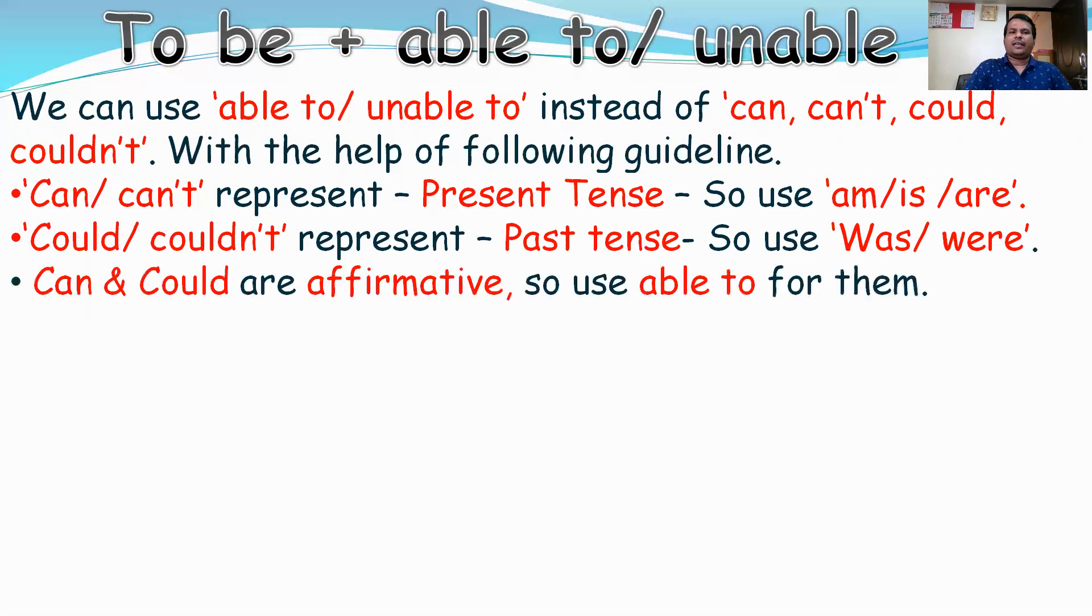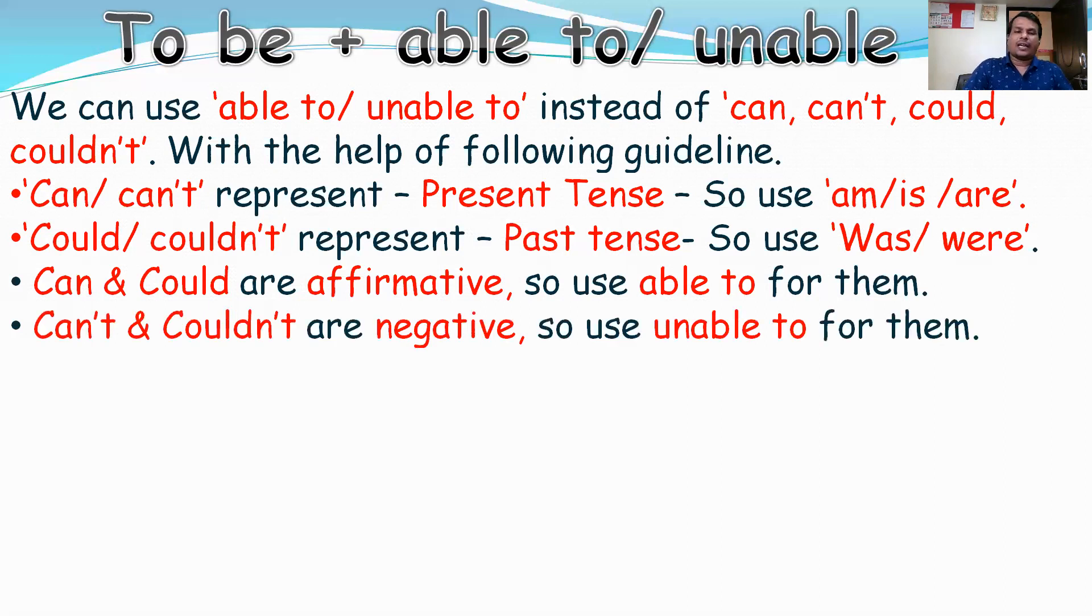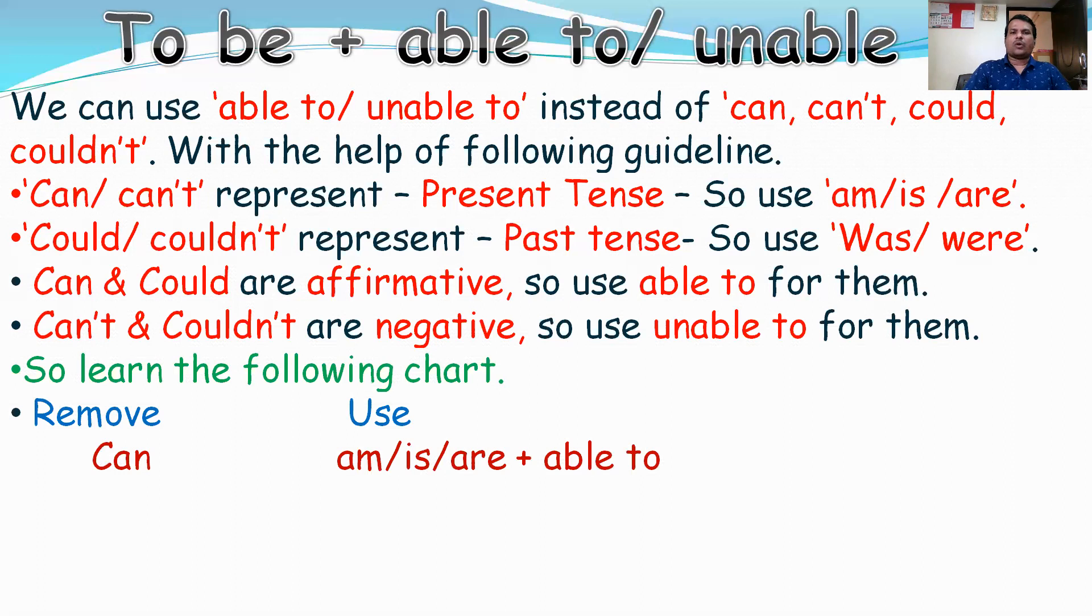Can and could are affirmative, so use able to for them. Can't and couldn't are negative, so use unable to for them. Look at the chart. Remove can and use am/is/are plus able to.